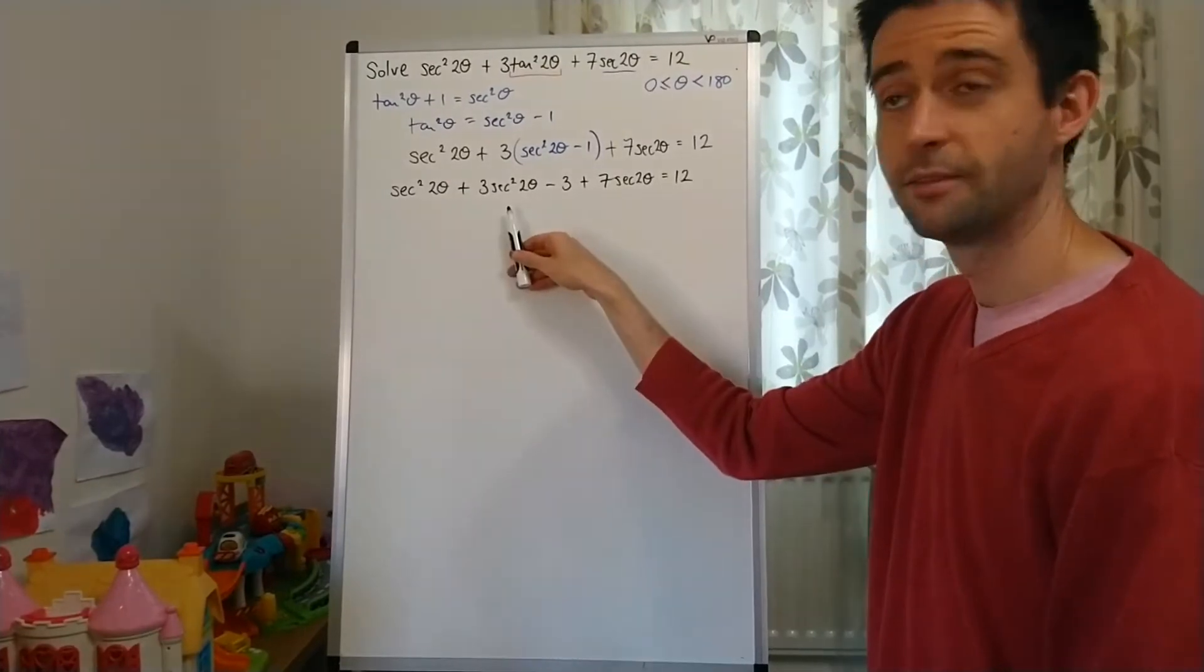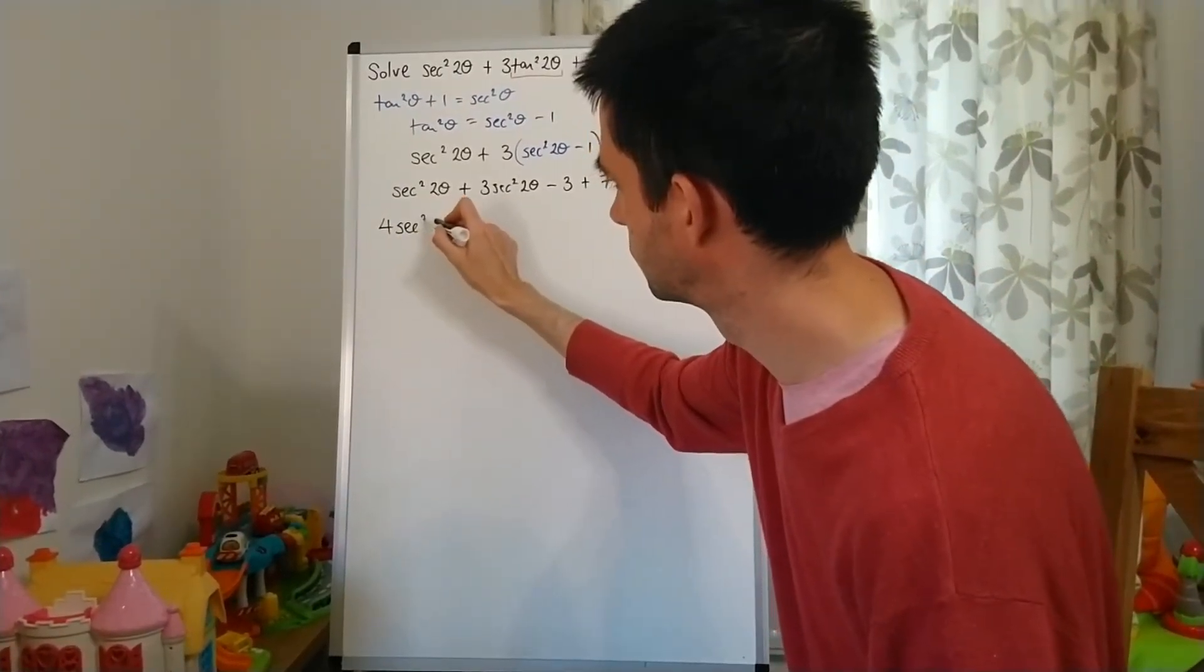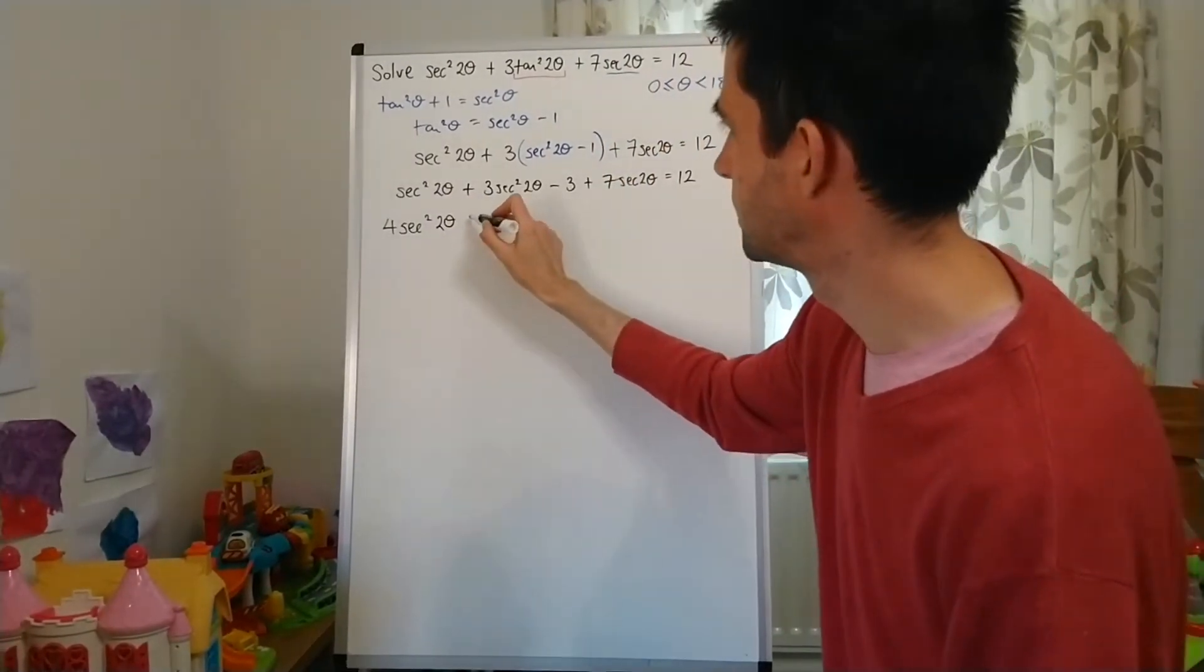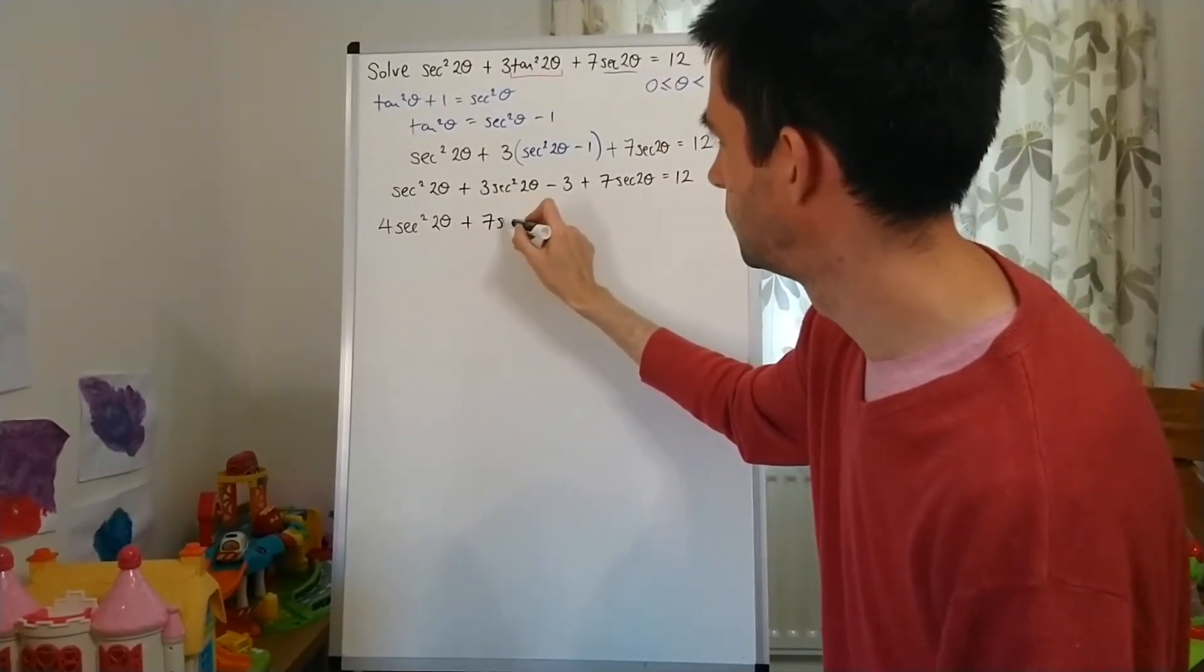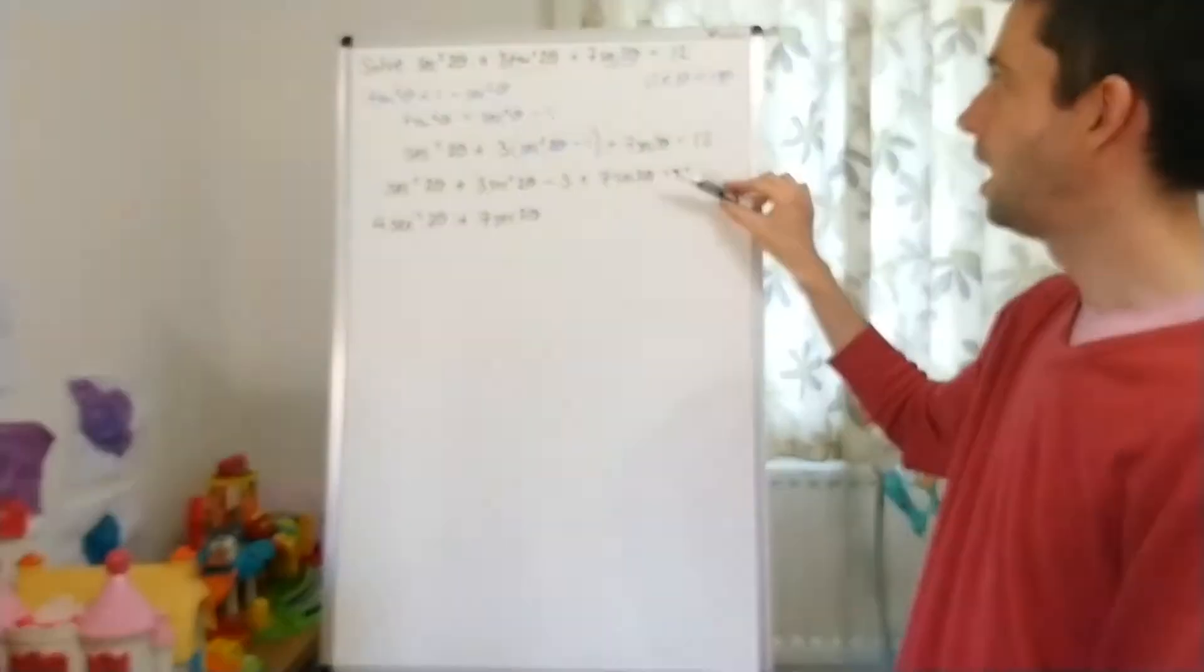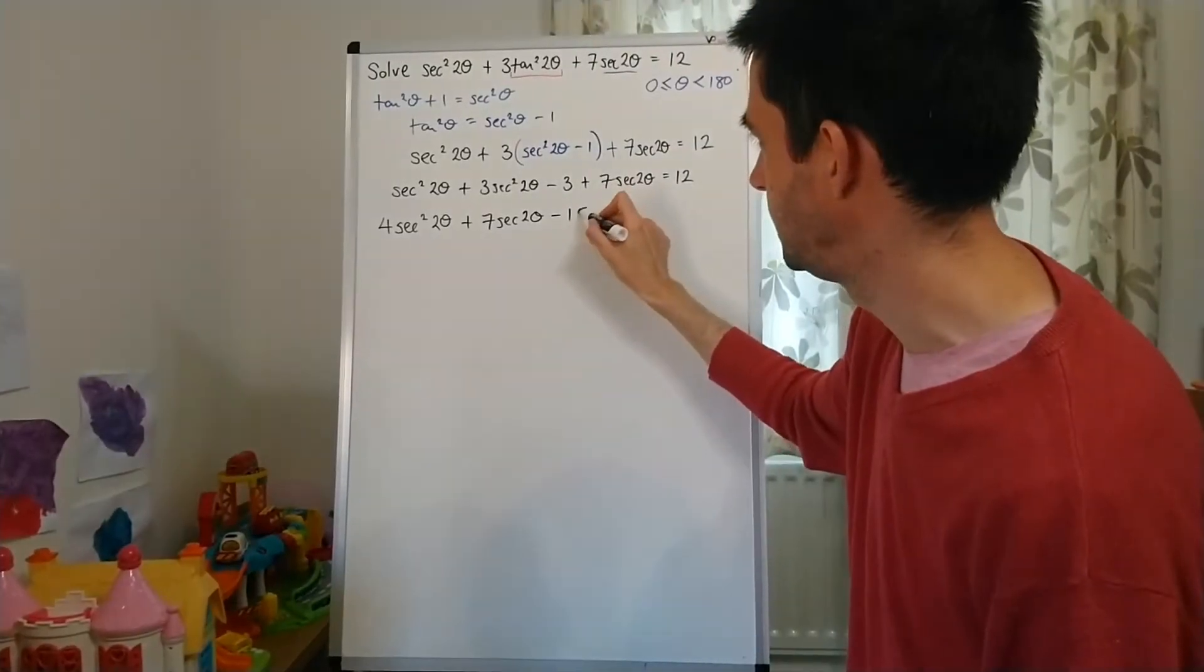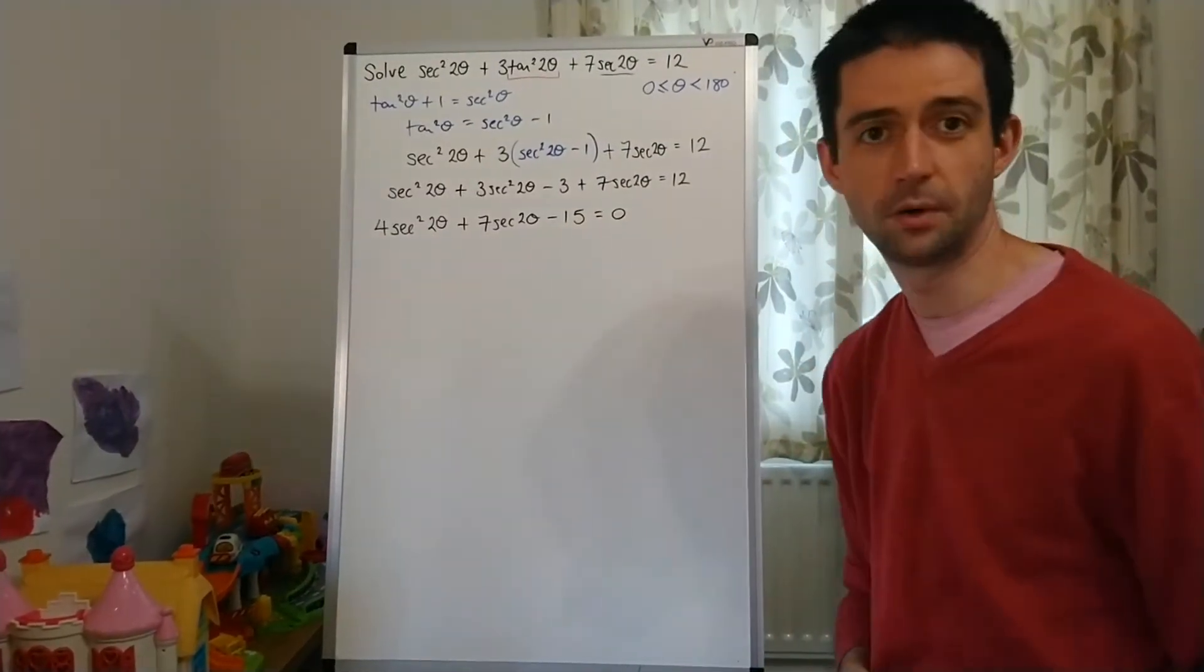Plus 7sec2θ = 12. Here I have 4sec²2θ + 7sec2θ. And then subtracting that 12, I'm going to have -15 = 0.